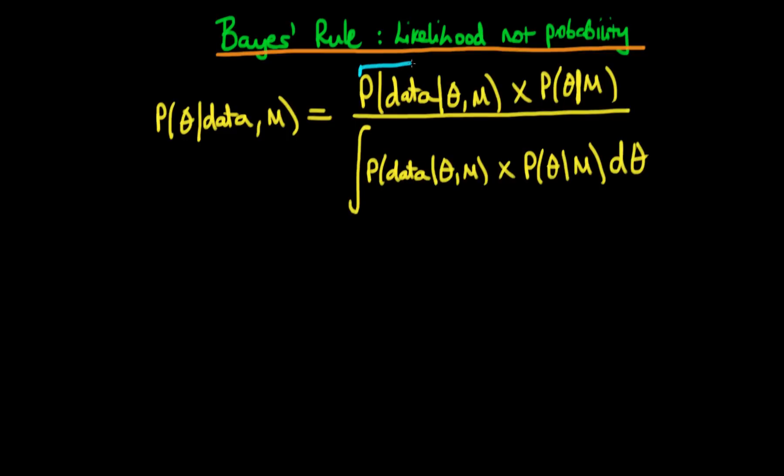In this video I want to focus on this part of Bayes' rule, which is the likelihood, and importantly I want to explain why we shouldn't think about the likelihood as being exactly the same as a probability, because importantly it doesn't satisfy some of the necessary properties for probability density.